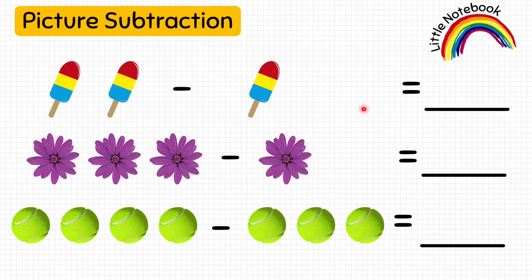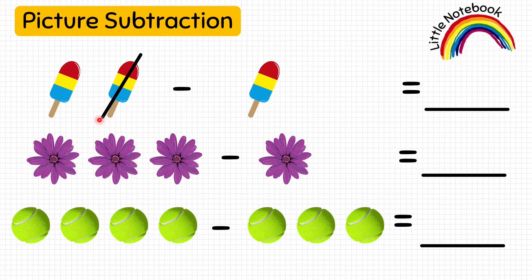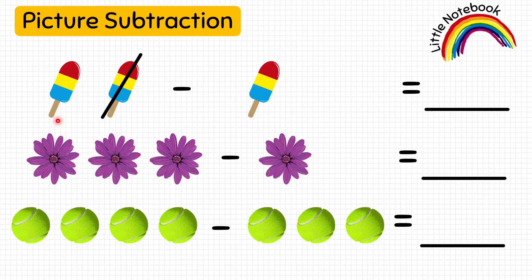To understand this question, think that you have two ice creams and you give one of them to your sister. So how many ice creams are you left with? Let's count: one, two — we have two ice creams. Now we give one to your sister, so let's cross one ice cream. We are left with only one ice cream, so let's write one in the blank. Two minus one equals one.